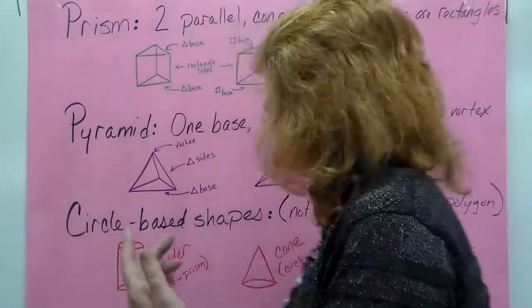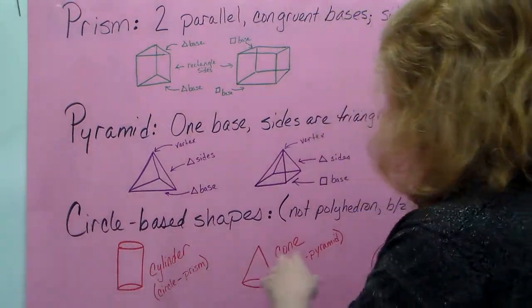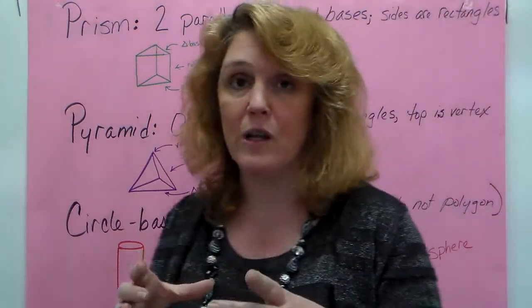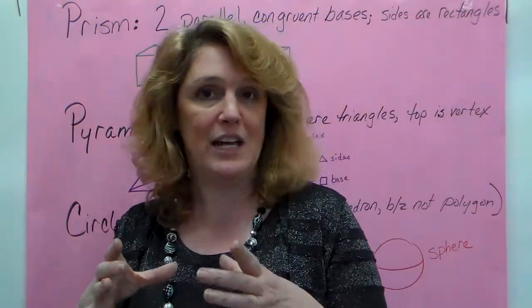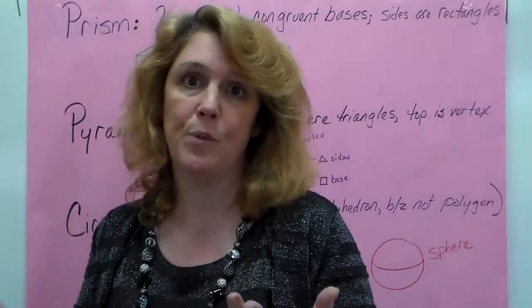Then we have circle-based shapes. Now these are still shapes, they're just not polyhedrons because they're not polygons. They've got a circle as a base. And polyhedrons can't have curved sides, they have to have straight sides. So they're not considered polygons or polyhedrons.